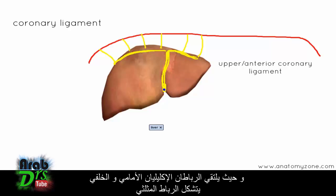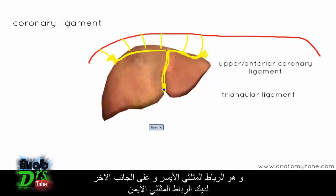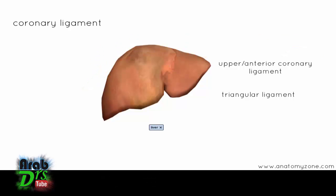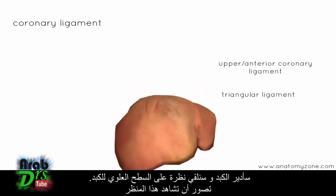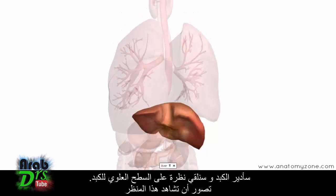Where the anterior and posterior coronary ligaments meet, you get the triangular ligament. On this side you get the left triangular ligament, and on the other side you've got the right triangular ligament where the upper and lower coronary ligaments meet. I'll show you a diagram to make this clearer. If we rotate the liver around, we're going to look at the superior surface of the liver.